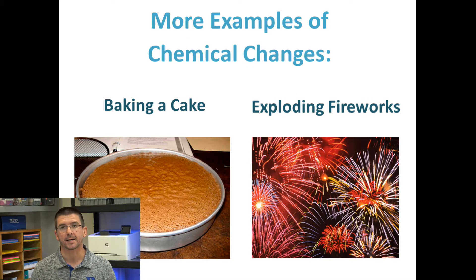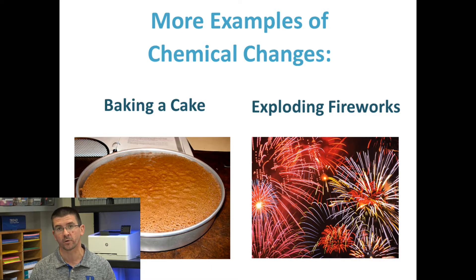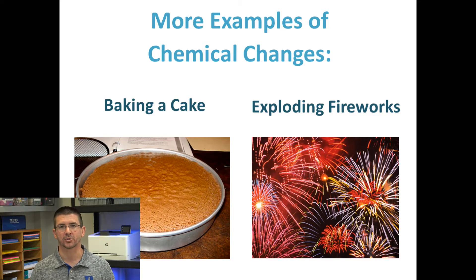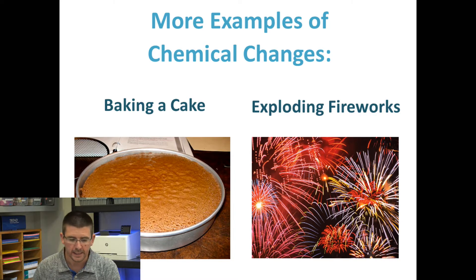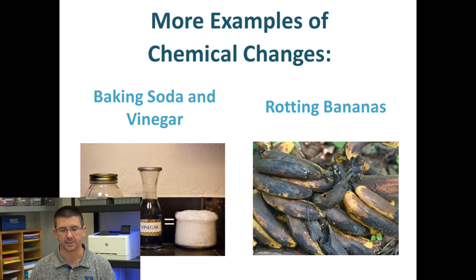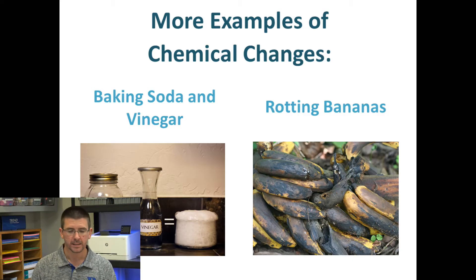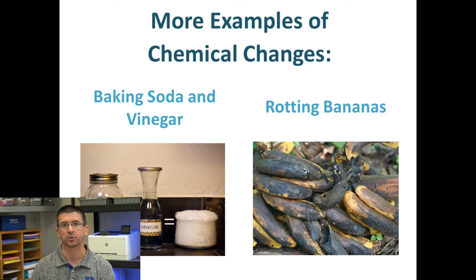Even things like baking a cake, where we take ingredients, mix them together, add heat, and they form a new substance that we can't revert back into our original materials. Exploding fireworks happen through chemical reaction that adds heat and creates that burst of light and color, because of chemical changes as the firework burns. Baking soda and vinegar react together to release gases as well as form sodium acetate. And even things like rotting fruit — we can take a banana, sit it out on the counter, and as it turns brown, its color change is actually happening because of chemical changes within the banana.